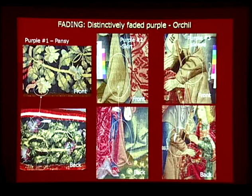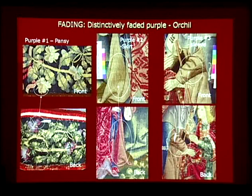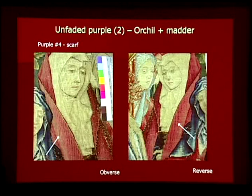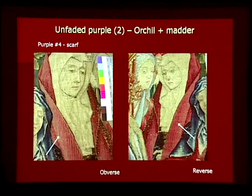I will now discuss the lightfast quality of the dyes. One color which was distinctively faded on the tapestry was purple. All these areas appeared to be dyed with orchil. The images on the top row are the obverse side of the tapestry and the images on the bottom row are the reverse side. As you can see, the purple is brown on the obverse side. However, one of the purple samples from a lady's scarf wasn't as faded as other purple samples. This purple appeared to be dyed with a mixture of orchil and madder, and the presence of madder, known to be lightfast, is likely the reason that the color here shows less change.